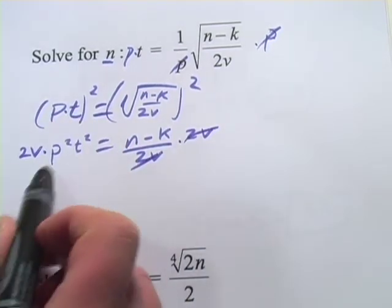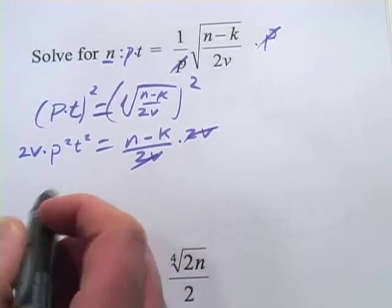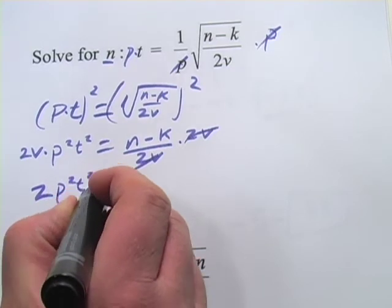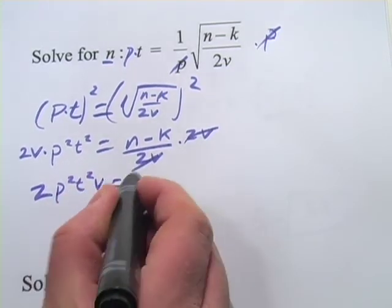And I'm just going to arrange, when I multiply, I'm going to arrange the letters in alphabetical order. It's usually how it's done. So I've got 2p squared t squared v. And now I've got n minus k.